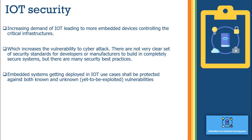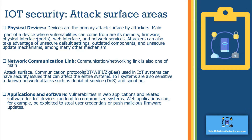If there is no root of trust or no trusted module, it can lead to the stealing of sensitive data. So broadly, we can have three attack surfaces for any IoT device: one is the physical attack surface, another is the network communication link, and the third is the application and software.